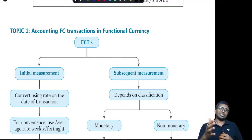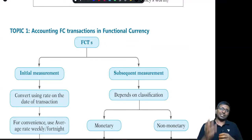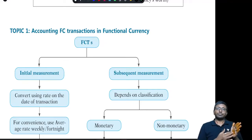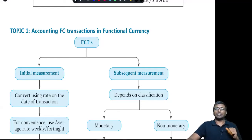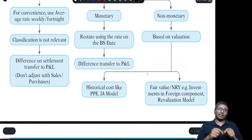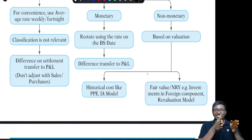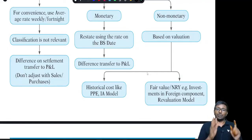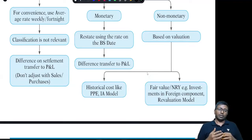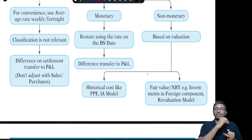For subsequent measurement — that is measurement on the balance sheet date — it is based on classification. If it is a monetary item, which is receivable or payable in terms of money, it requires restatement using the rate on the balance sheet date. Because of this, the book rate and the balance sheet date rate differ, and the fluctuation gain or loss has to be transferred to profit and loss — meaning other income or other expenditure — not adjusted to sales, purchases, COGS, or assets.